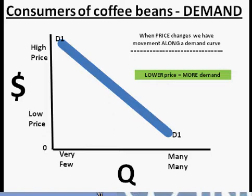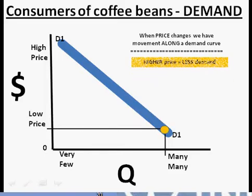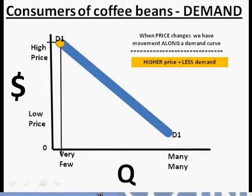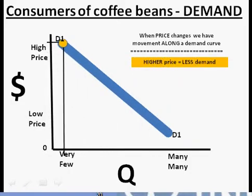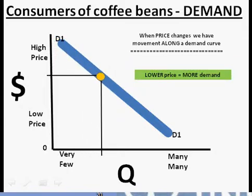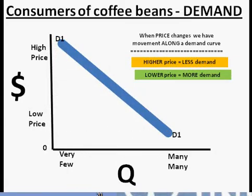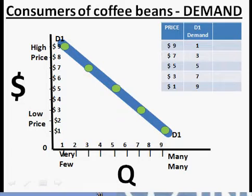If the price is low there'll be more demand; as the price goes higher there'll be less demand. Lower price, more demand; higher price, less demand. The demand curve is very sensitive to a price change. Anytime you're looking at a problem and the problem says the price has changed, then you know you're going to have movement along that curve.